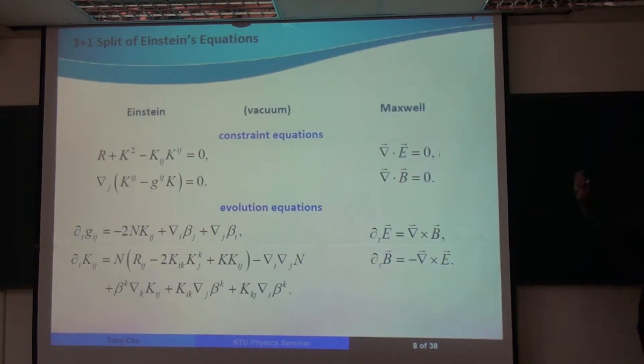This decomposition into constraint and evolution equations is not unfamiliar to you because you've seen the same thing from Maxwell's equations in electromagnetism, where you have constraint equations that the electric magnetic field has to satisfy, and you have evolution equations for them. The main difference is that Einstein's equations, they're non-linear. So they're a little messier to deal with.